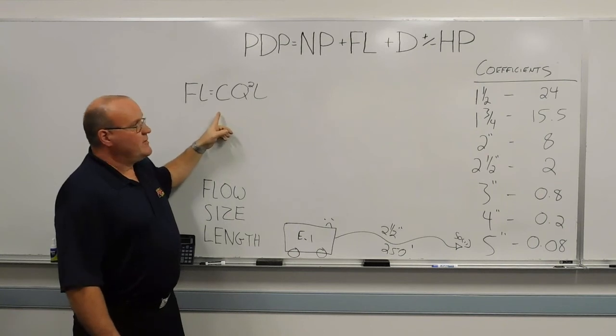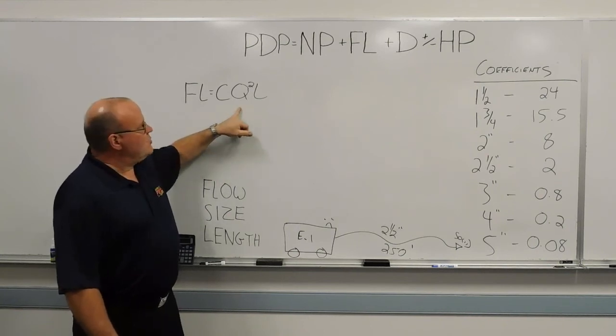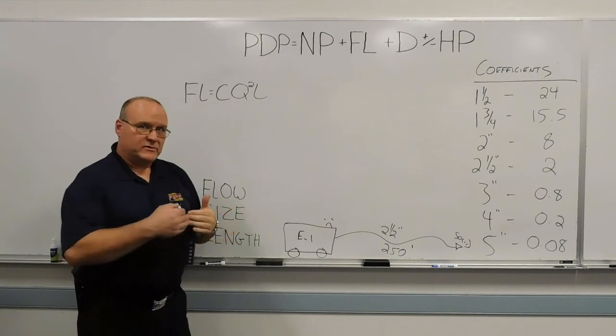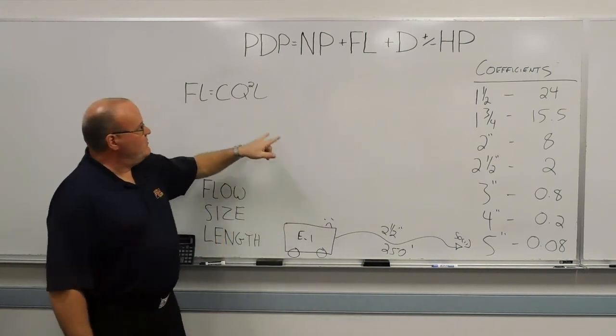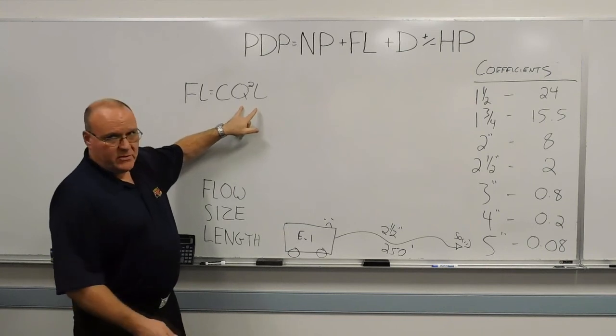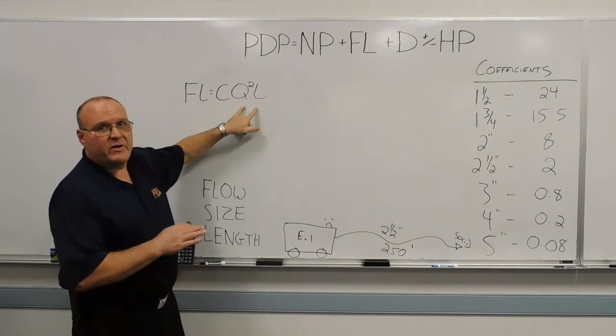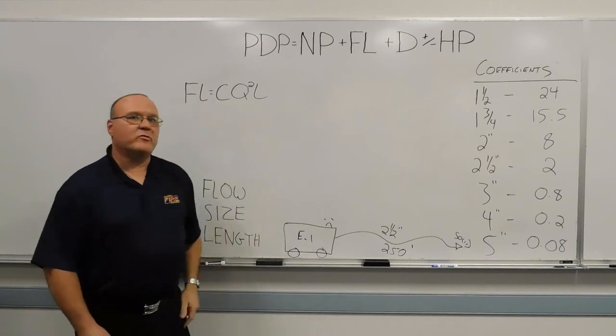The C is the coefficient. The Q² is your gallon per minute flow, squared. And then your L is your length of hose. And both the flow, or the Q, and the L are divided by 100 before they're multiplied in that formula.